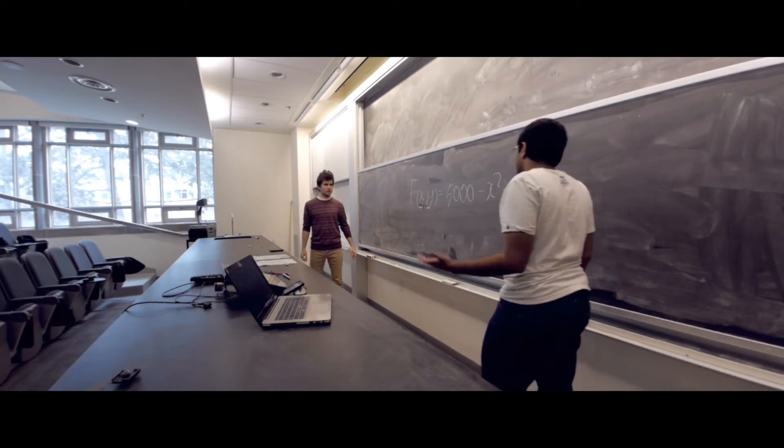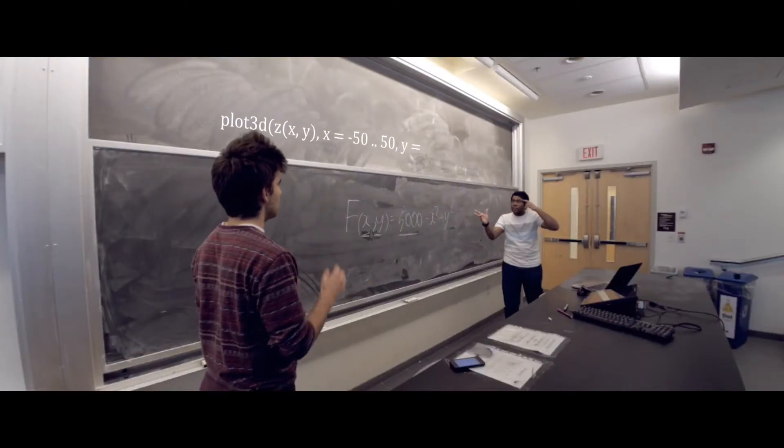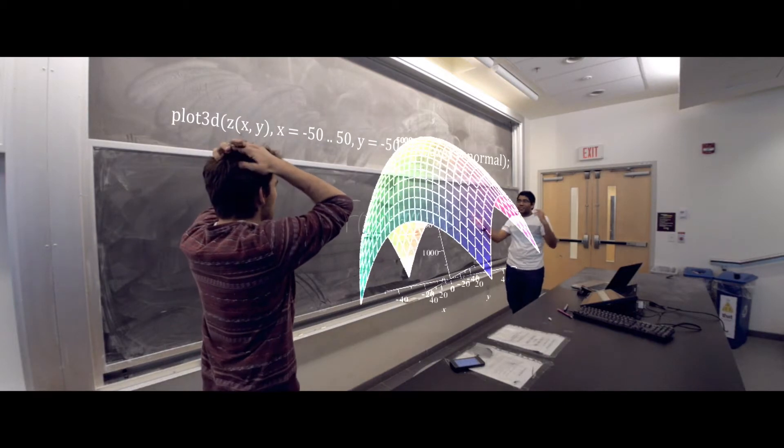Say hello to my little friend I like to call Plot 3D. I just think of the equation, I think what parameters I want. Let's do 50 on each axis. And then... No!